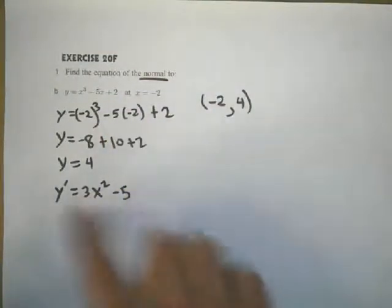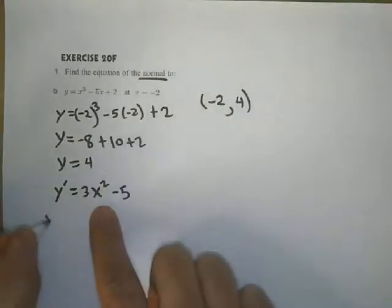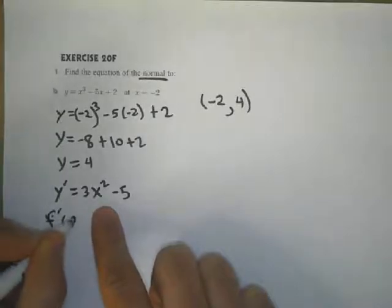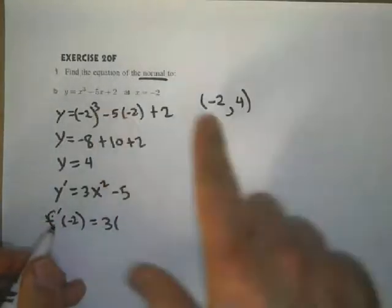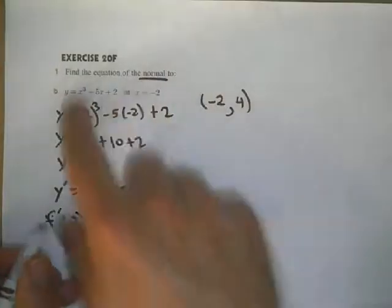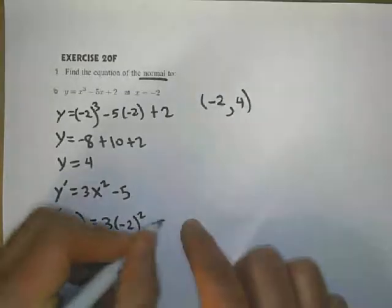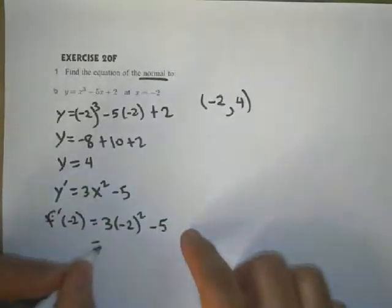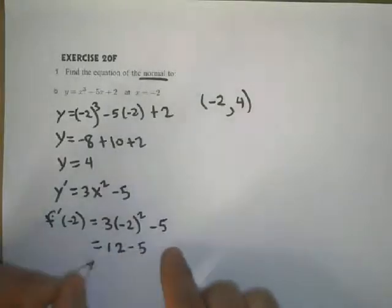Here's my derivative and I'm going to plug in negative 2 in place of x. That's going to give us the tangent slope, the gradient for this function at that point. So 3 times negative 2 squared minus 5. This is going to give me 3 times 4, which is 12 minus 5. That's going to give me 7.